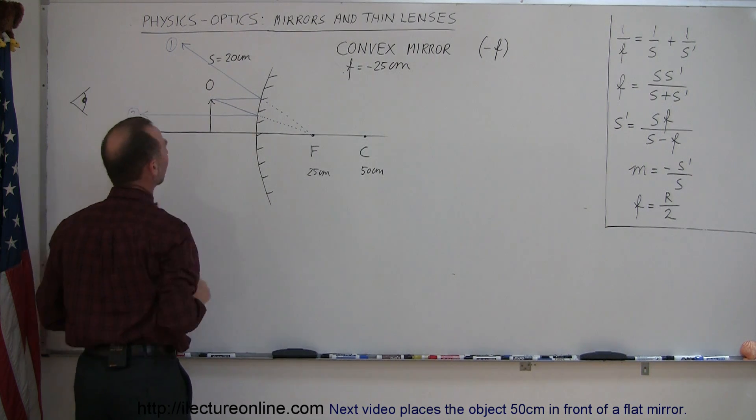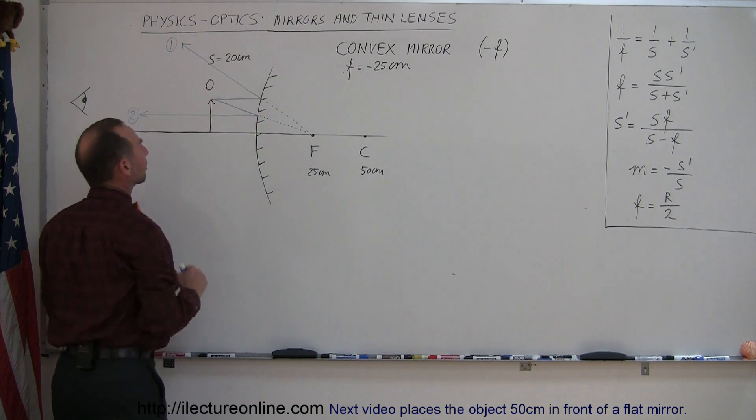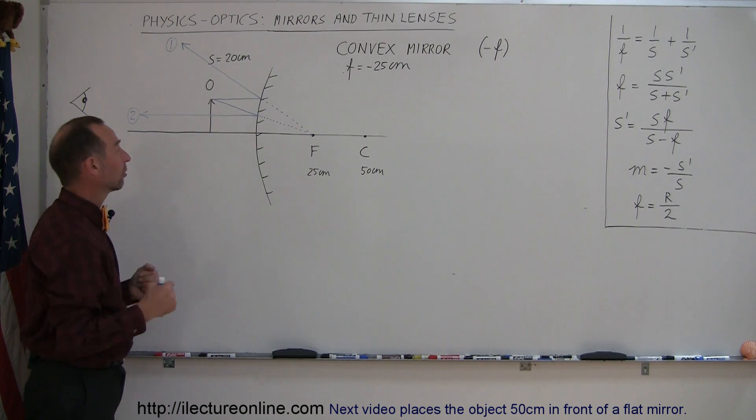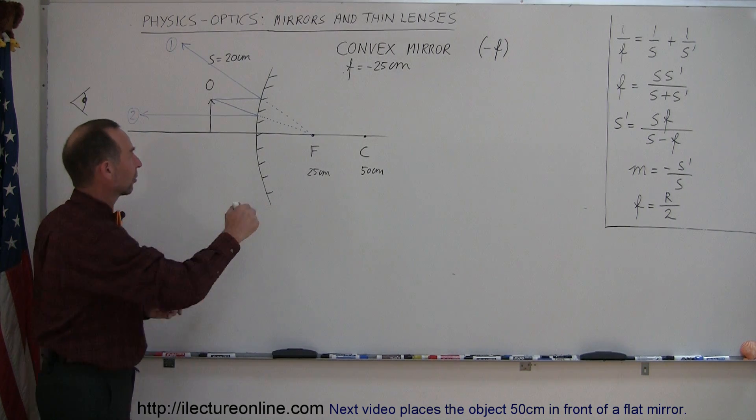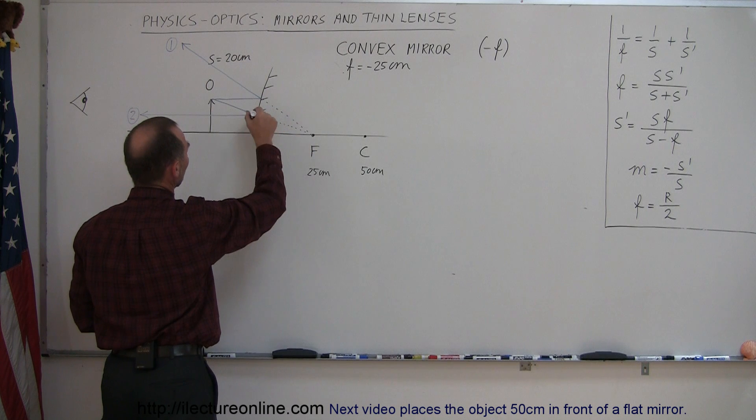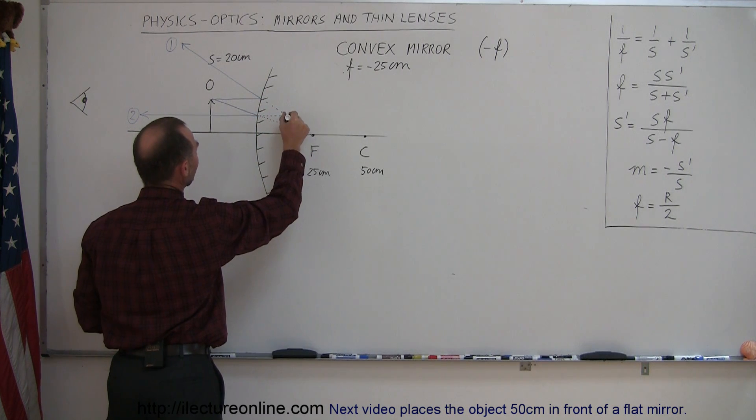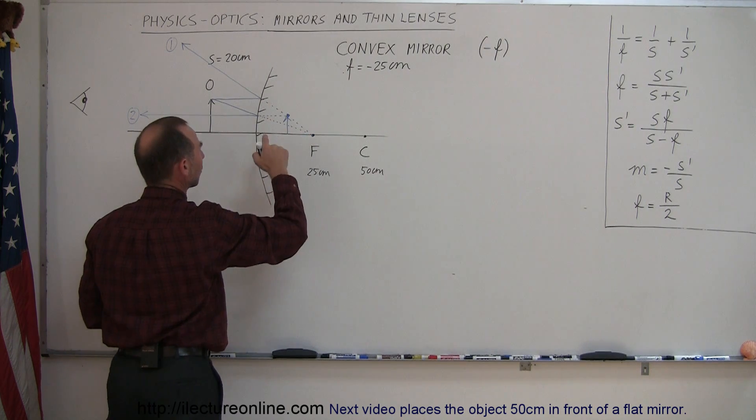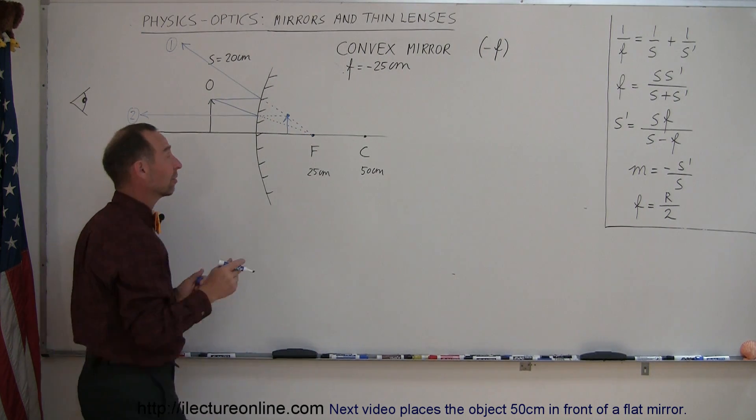So again the two rays do not converge but the brain looks at those two rays coming in this direction, it extrapolates back out and says oh I know that this ray came from back here somewhere, this ray appears to be coming from back here. Where did the two meet?